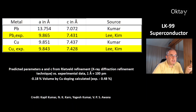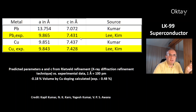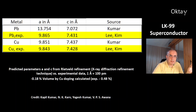These are predicted parameters A and C from the Rietveld refinement, which is an X-ray diffraction refinement technique, versus the experimental data shown here in yellow. You can see that for lead apatite the predicted numbers differ much from the experimental data from Lee and Kim, but for the LK-99 compound the numbers match very well. These scientists predict a volume reduction with the copper doping of just 0.18%, while the experimental value was 0.48% volume reduction.